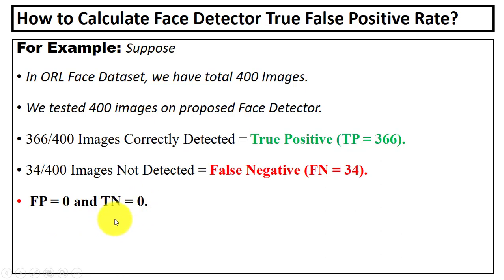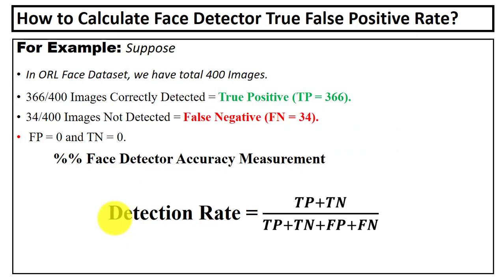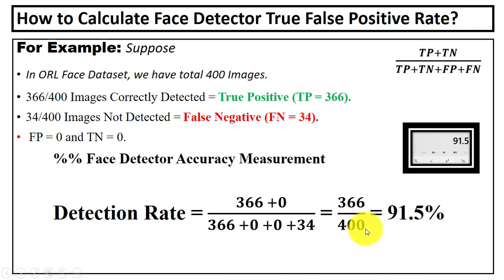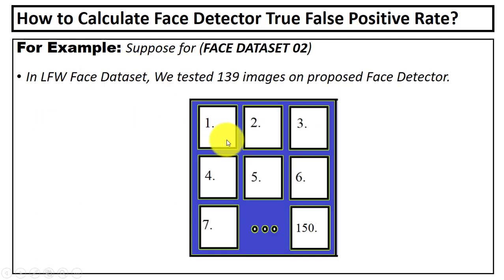There is no false positive and no false detection, as in the face dataset we have all face images, so the value for FP is also zero. We will now compute the face detector accuracy using the formula: (TP + TN) / (TP + TN + FP + FN). Putting in the values — TP is 366, TN is 0, FP is 0, FN is 34 — we got 91.5 percent face detection accuracy for the ORL face dataset.